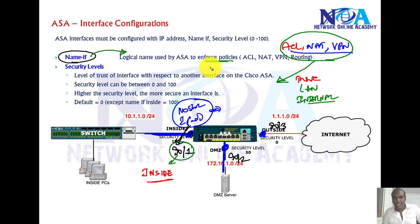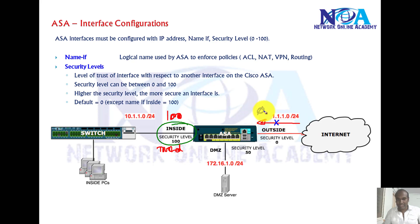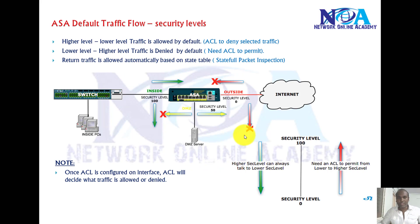Two additional parameters are needed compared to routers: first, you must give the interface a name — without a name the interface won't work. Second, you must define the security level, i.e., the level of trust on that interface. Default levels commonly used: inside interface gets 100, outside gets 0 because anything from outside is not really trusted, and DMZ gets 50 — somewhere between 0 and 100. You can assign any number in this range.